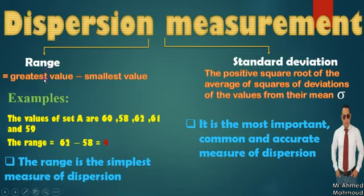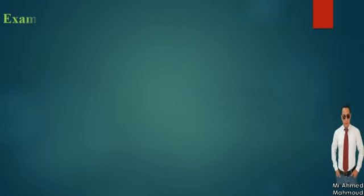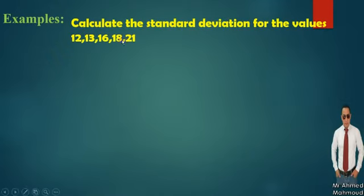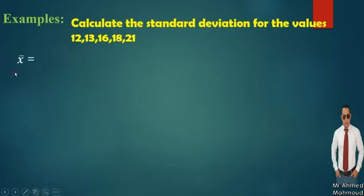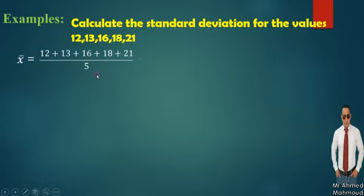Let's have a very important example. Calculate the standard deviation of the values: 12, 13, 16, 18, and 21. First step: find the mean. x-bar = (12 + 13 + 16 + 18 + 21) / 5 = 80 / 5 = 16. So x-bar equals 16. In the second step, I will draw a table with three columns.